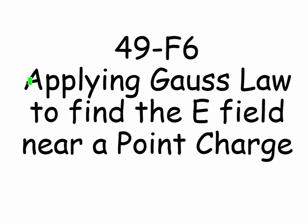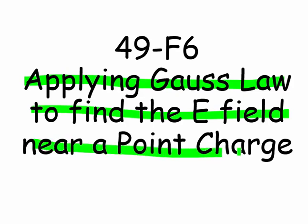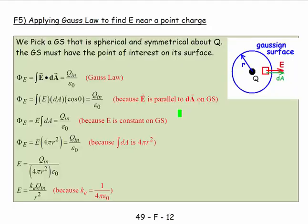Welcome. This is 49F6, applying Gauss's law to find the electric field near a point charge. We're going to use Gauss's law to find the electric field at various positions near certain patterns of charge, and the first one is a point charge. We know the answer already from the previous chapter, but let's use this as a way of learning how to do these things. We want to find the electric field at some point at a given location near a point charge.